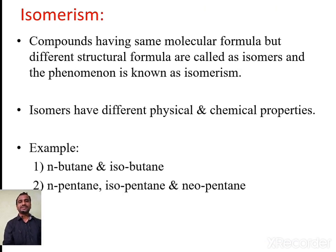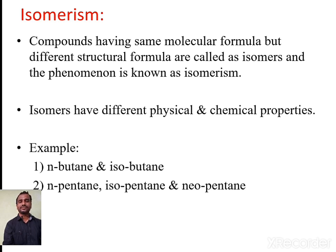The next simple concept is isomerism. Those compounds having the same molecular formula but different structural formulas are called isomers of each other, and this phenomenon is called isomerism. Since isomers have the same molecular formula but different structural formulas, they have different physical and chemical properties from one another.